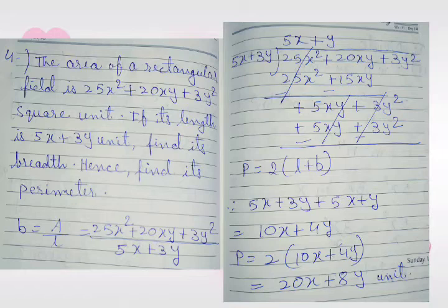We multiply 5x plus 3y with y and get plus 5xy plus 3y squared. We change the sign of the last line — both terms are cancelled. The answer is 5x plus y, which is the breadth.